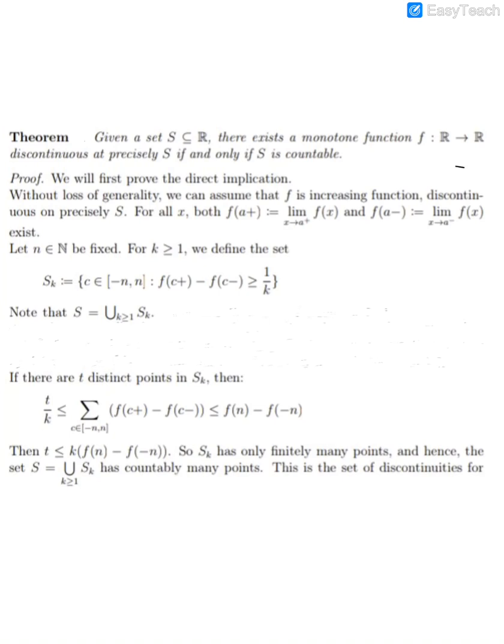So let's start. We will first prove the direct implication. We will show that the set of discontinuities of a monotone function from R to R is countable. Without loss of generality we can assume that f is an increasing function, discontinuous on precisely a set S.